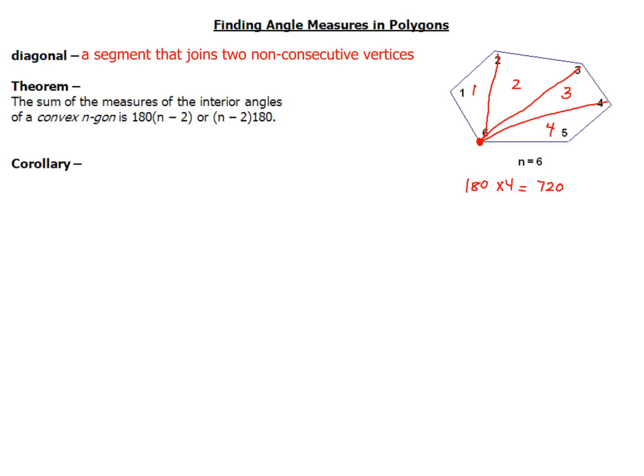The theorem states that the sum of the measures of the interior angles of any convex n-gon is 180 times (n minus 2), or sometimes textbooks will write it as (n minus 2) times 180. The 180 comes from the number of degrees in a triangle, and n is your number of sides of the figure.